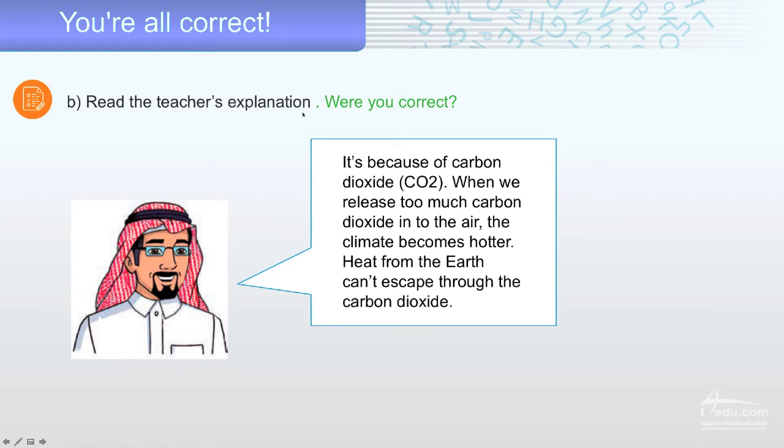With the teacher's explanation, were you correct? It's because of carbon dioxide, CO2. When we release too much carbon dioxide into the air, the climate becomes hotter. Now, heat from the air can't escape through the carbon dioxide. This is very dangerous to our world. That's why we need to save our planet and decrease the smoke.